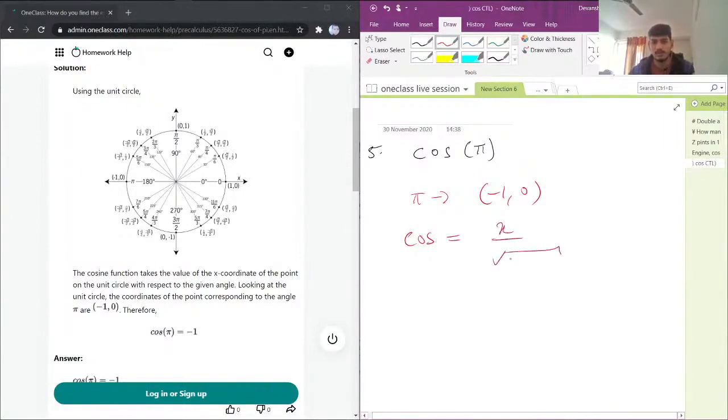square root of x squared plus y squared. X is negative 1, y is 0. Cosine of pi will be equal to negative 1 over square root of negative 1 squared plus 0, which is negative 1 over